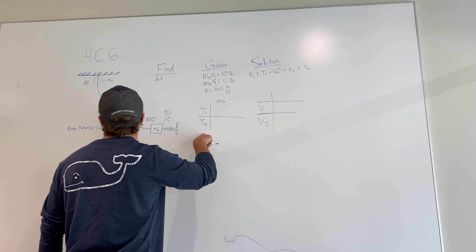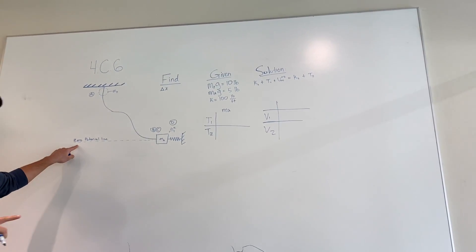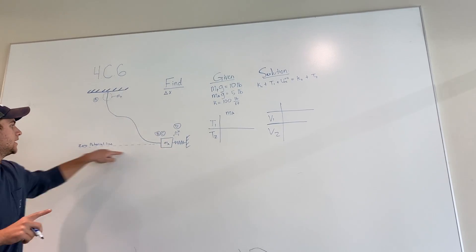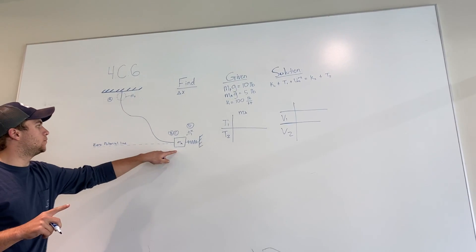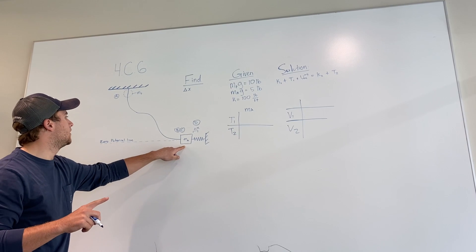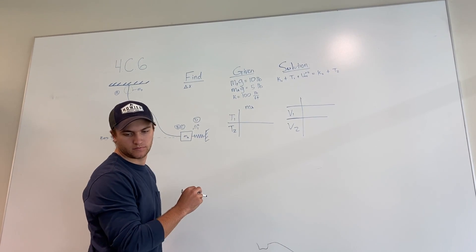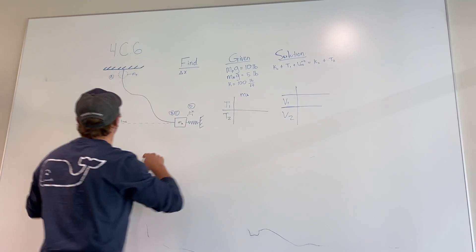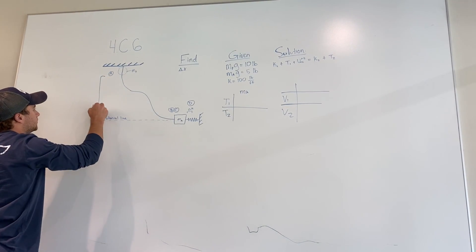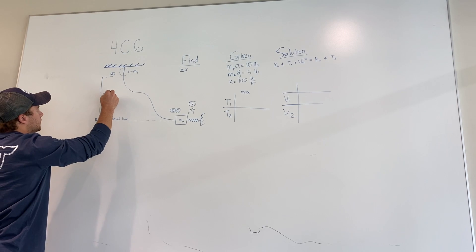V1 is a potential and T1 is a kinetic. So we set the zero line at the mass A, so there is no potential at mass A. And this height was given and it was 10 feet.